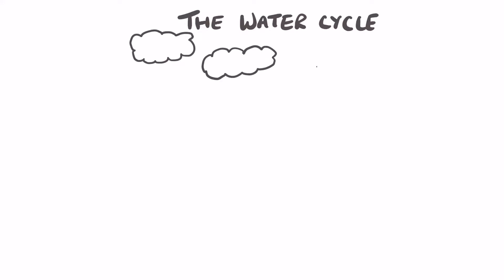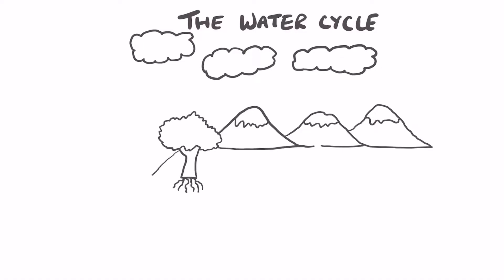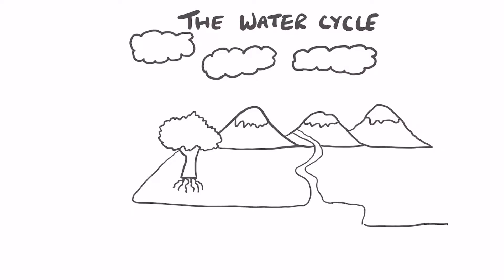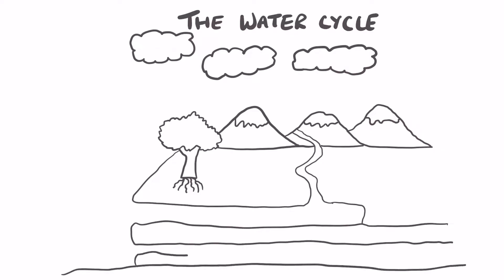Water on the earth is always in flux and is always moving. Only a small percentage of the total water on earth is used by humans and plants. Most of this water is either being stored or flowing from one location to the next.